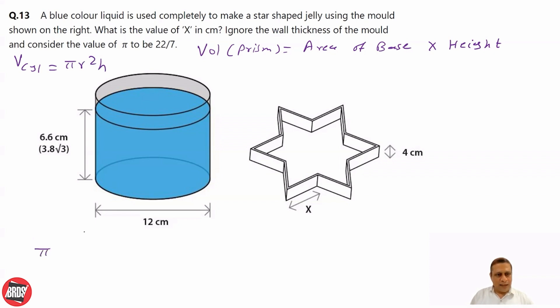So that is pi r. What is radius? Radius is 6 unit, right? Diameter is 12. So radius is 6. So pi times 6 square times height. Height, they have said 3.8 root 3. So let me write 3.8 root 3. So this is volume of liquid.